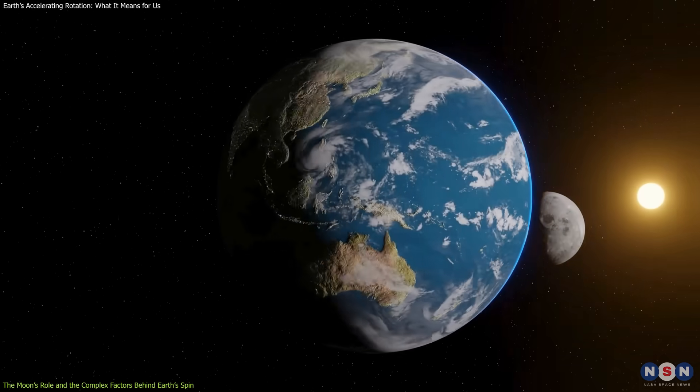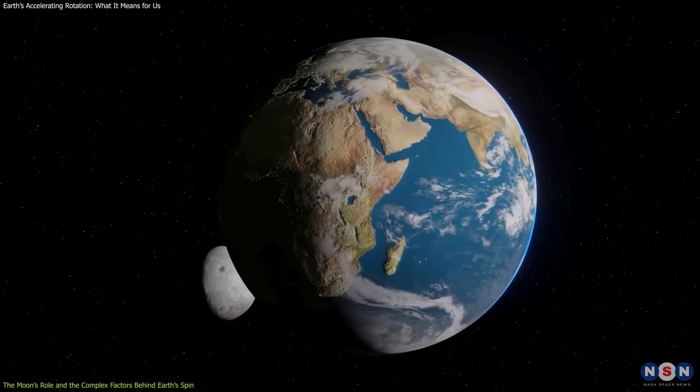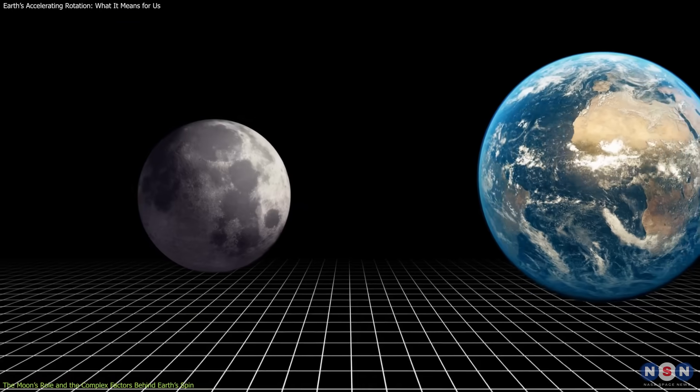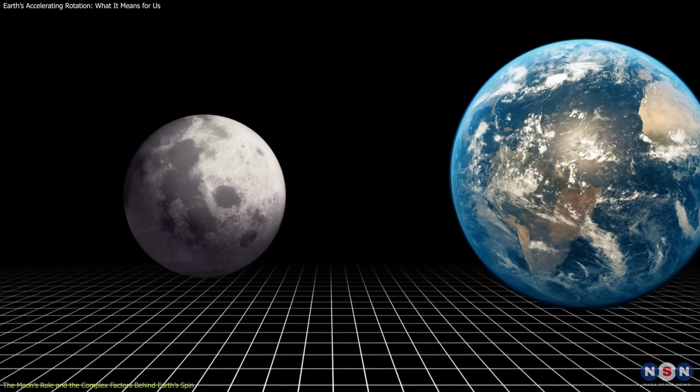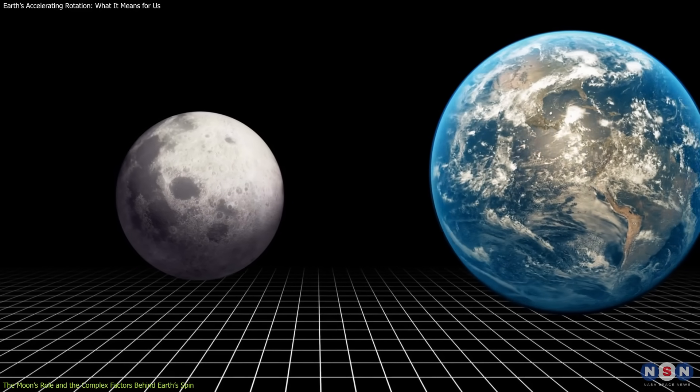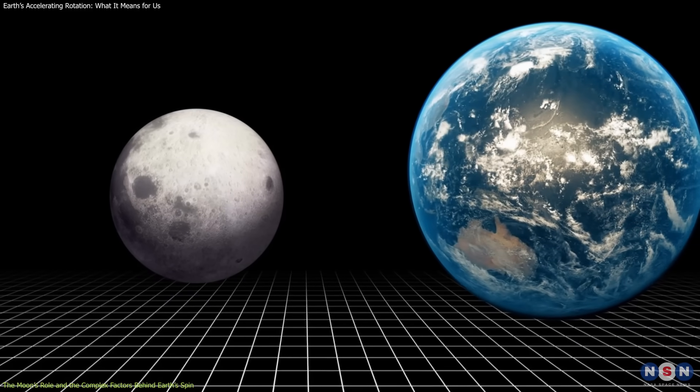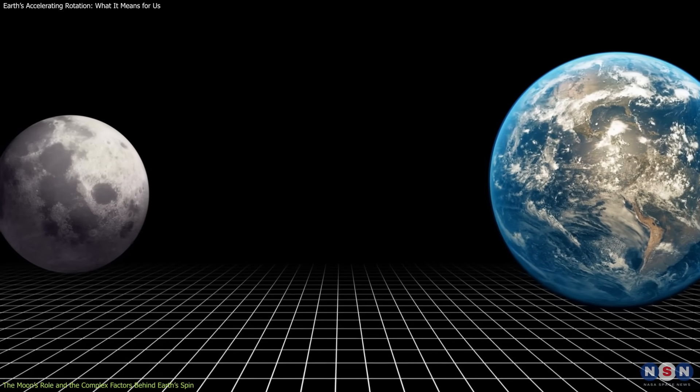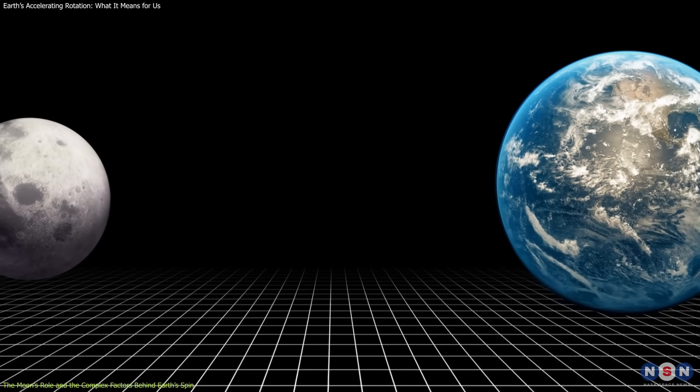The effect varies depending on the position of the moon relative to Earth. Earth's rotation can speed up or slow down depending on the moon's position in its 18.6-year orbit. During certain phases of this cycle, the moon is closer to Earth, which increases its gravitational influence and speeds up Earth's rotation. Conversely, when the moon is farther away, its effect weakens, causing Earth to slow down.